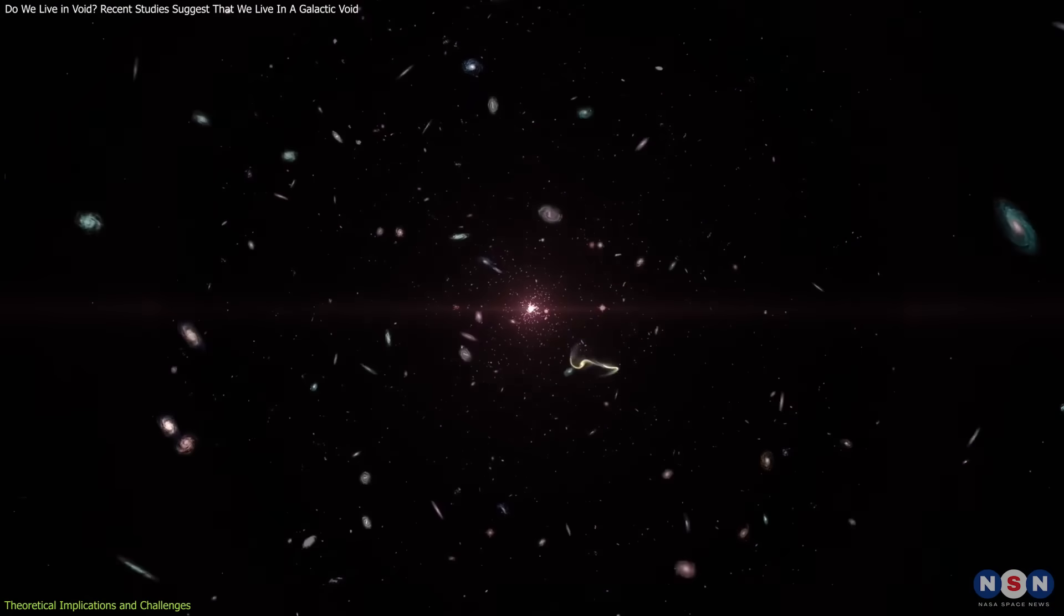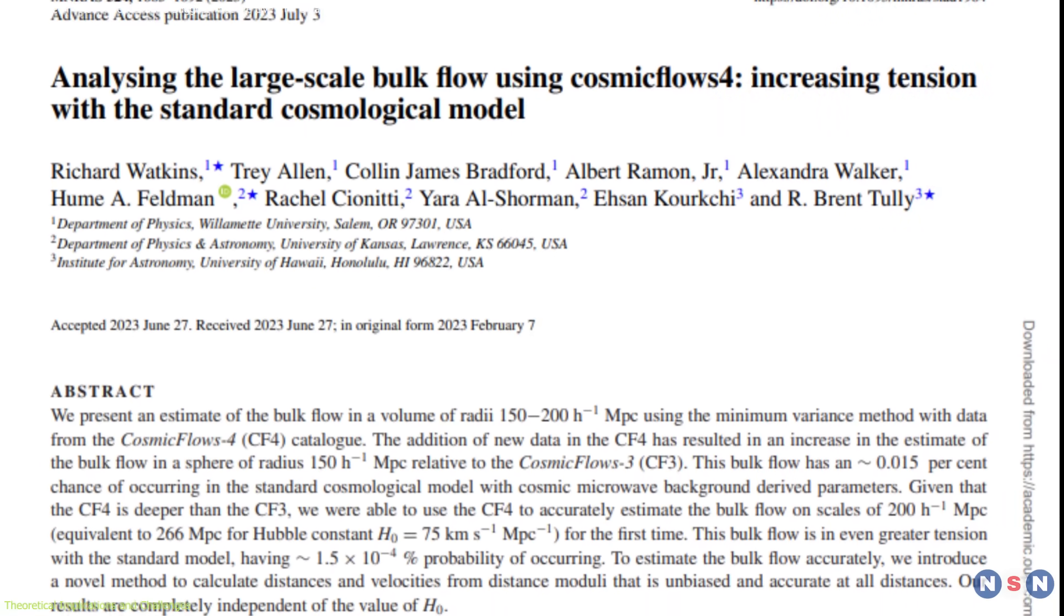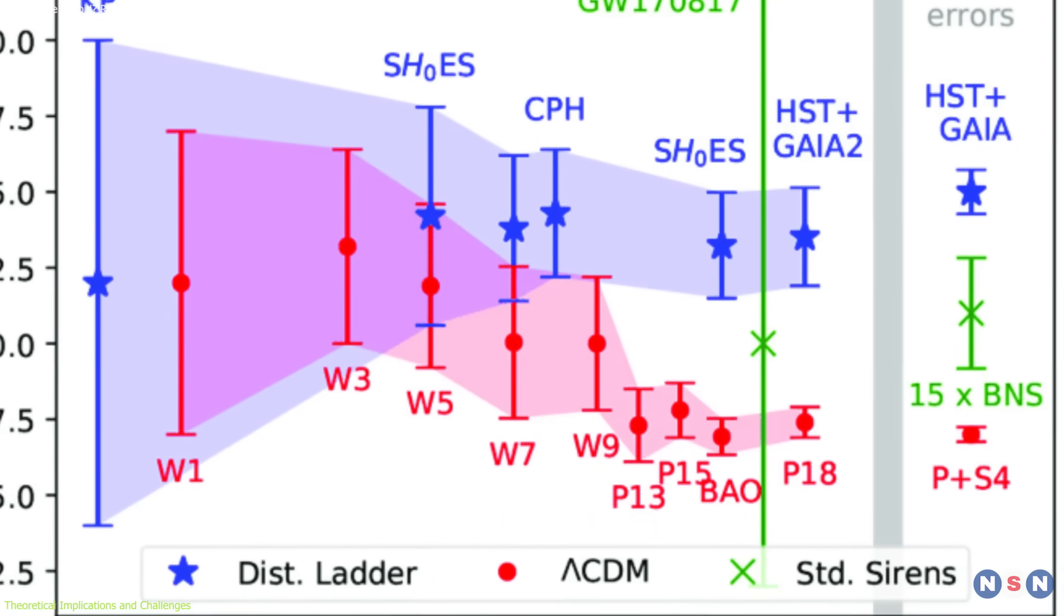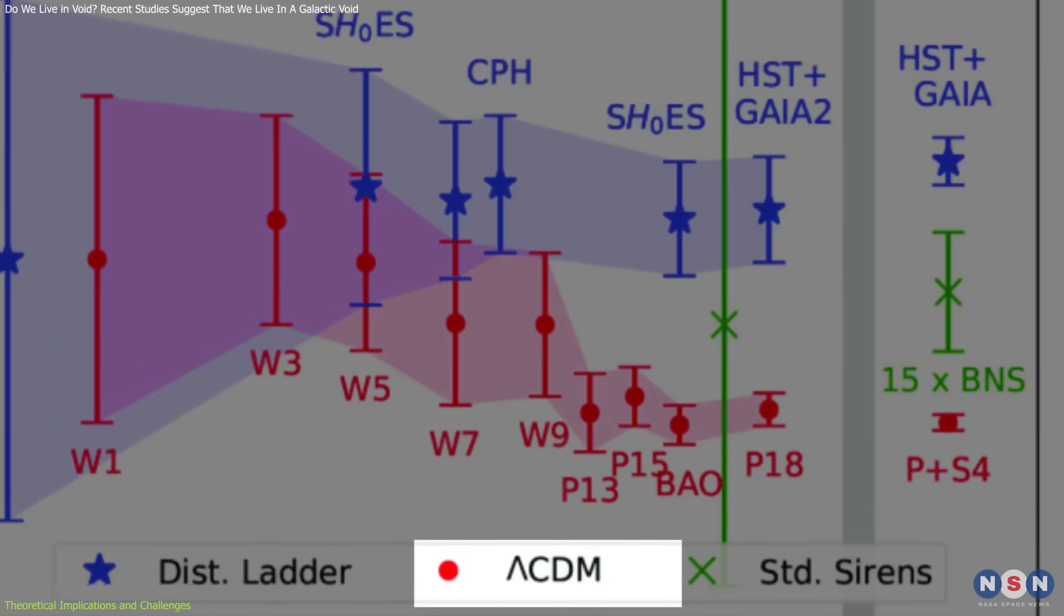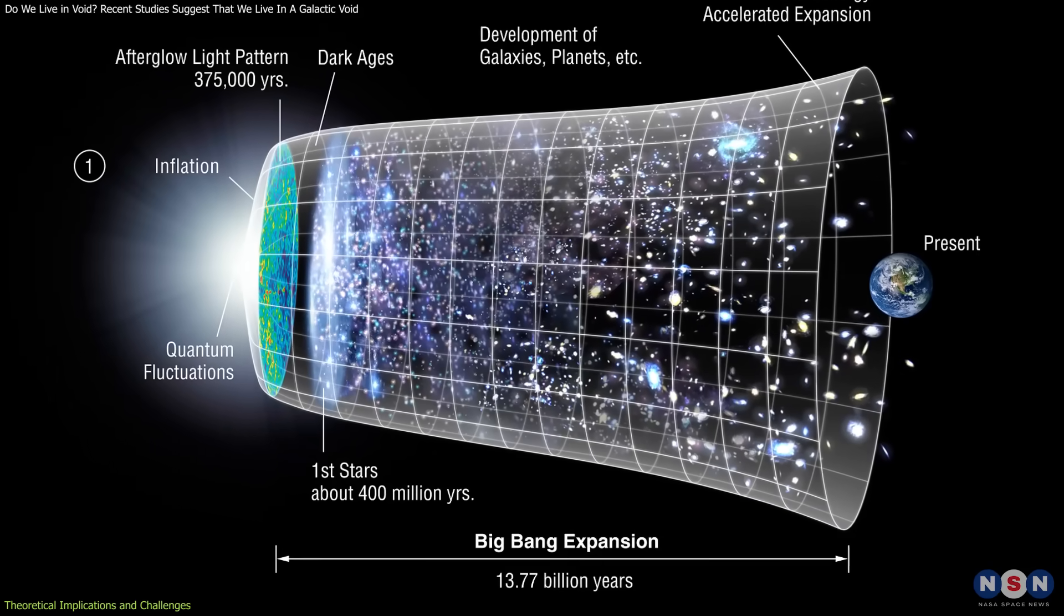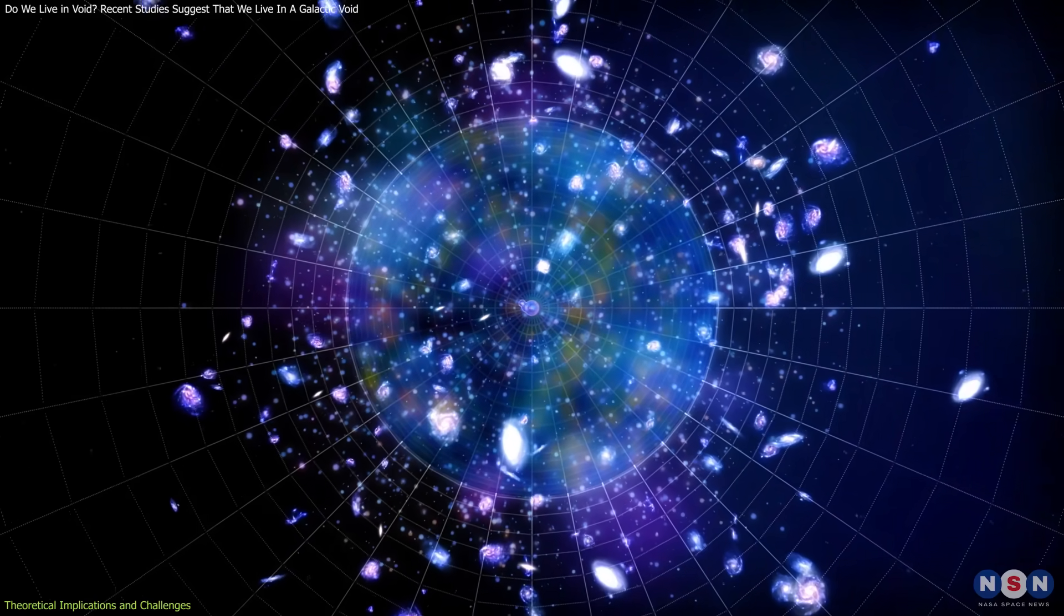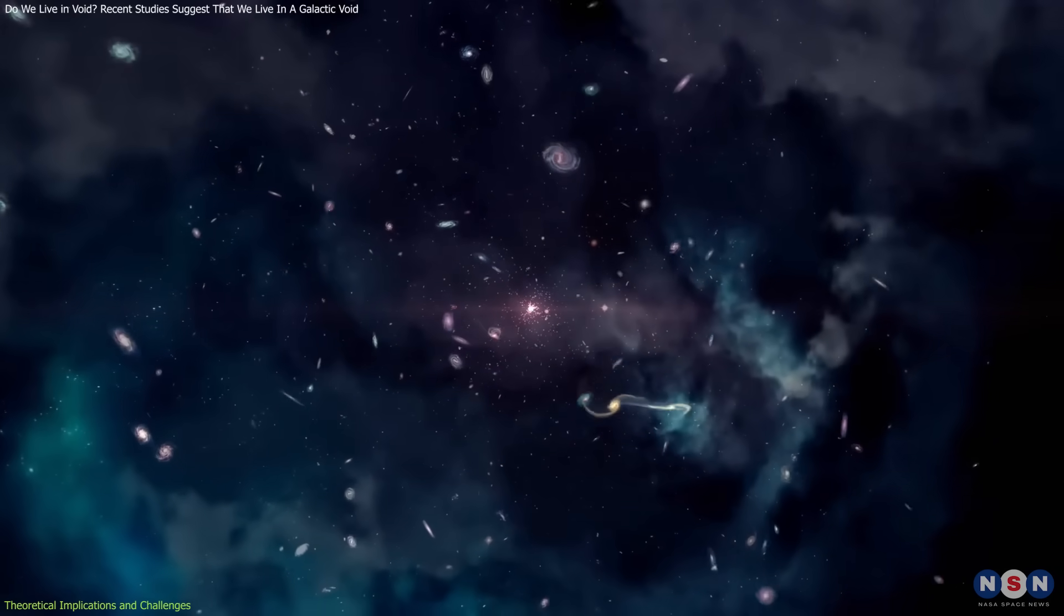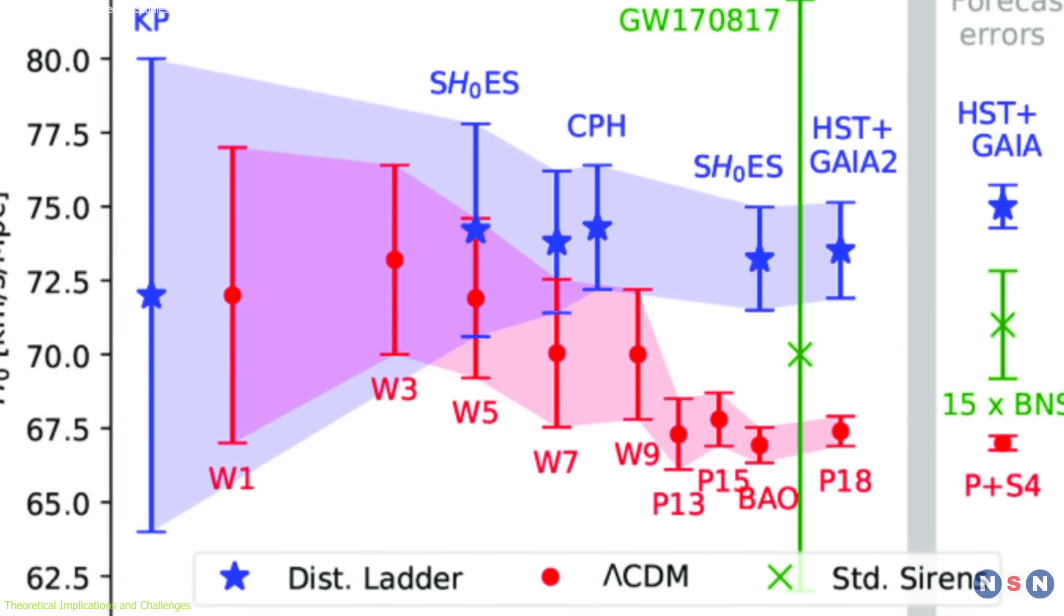Indranil Bannock's work highlights a troubling inconsistency, known as the Hubble tension, which refers to differences in the measured expansion rate of the universe when observed locally versus predictions based on the CMB. This tension suggests that conventional models, like lambda-cold dark matter, might be missing critical nuances of cosmic structure. Bannock proposes that our giant void could significantly influence local measurements of cosmic expansion, suggesting that these measurements might be inflated by the dynamics within the void itself.